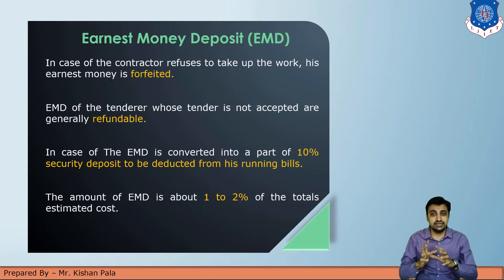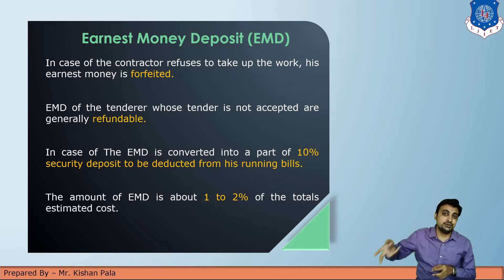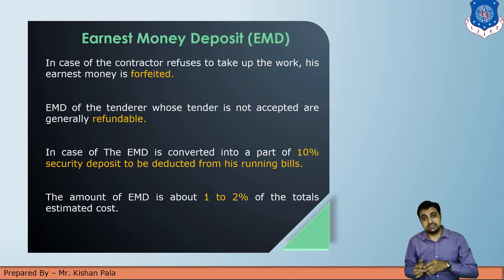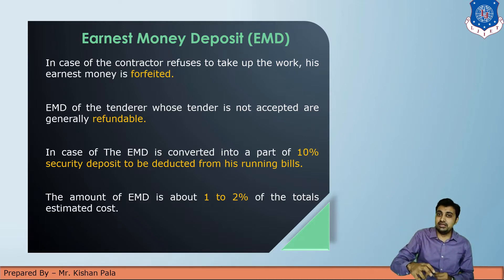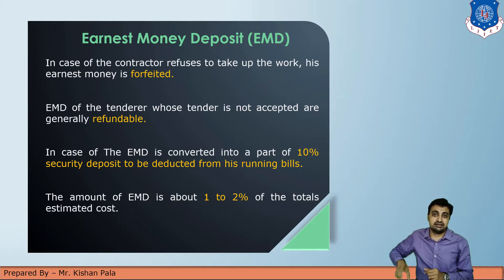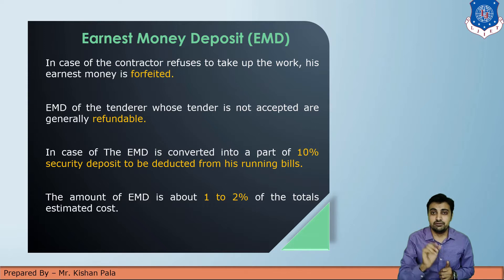The selected contractor's EMD will be converted into the security deposit. The EMD of the selected contractor will be frozen and converted into the security deposit. EMD is 1 to 2% of the total cost of the project.